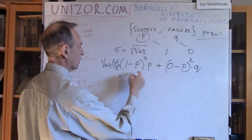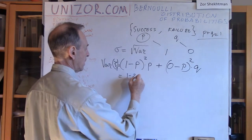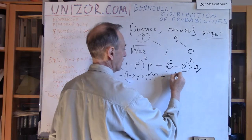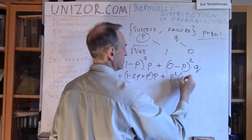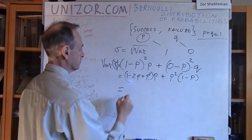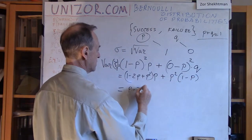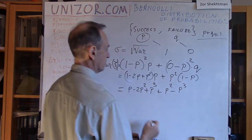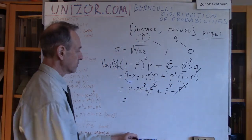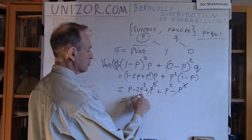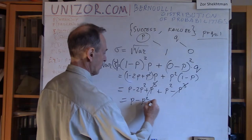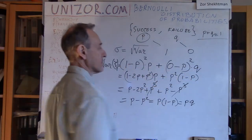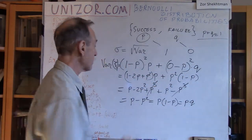Let's simplify the variance formula. (1 minus p) squared times p plus p squared times q, where q equals 1 minus p, expands to p minus 2p squared plus p cubed plus p squared minus p cubed. The p cubed terms cancel, leaving p minus p squared, which equals p times (1 minus p), or p times q. So the variance simplifies very neatly to p times q.